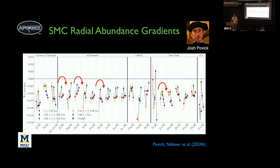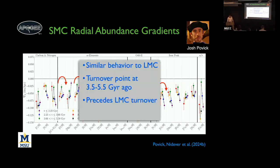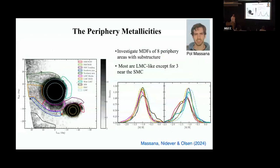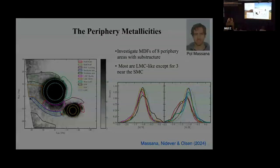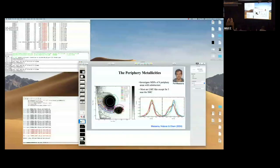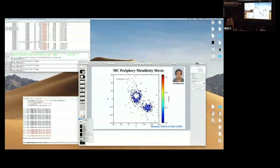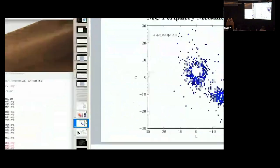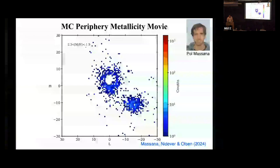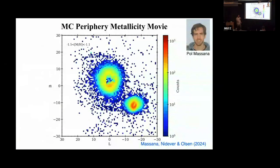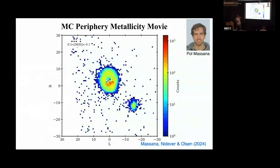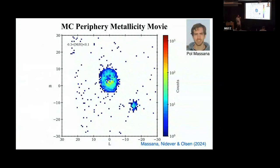Alex Riley, Durham University: Going back to the metallicity distributions in different regions — can you invert the problem and look only at very low-metallicity stars to see if new substructures pop out? Response: Paul has a movie showing different metallicity slices. We've stared at this for a while and haven't seen anything obvious pop up, but maybe we should spend more time doing that.